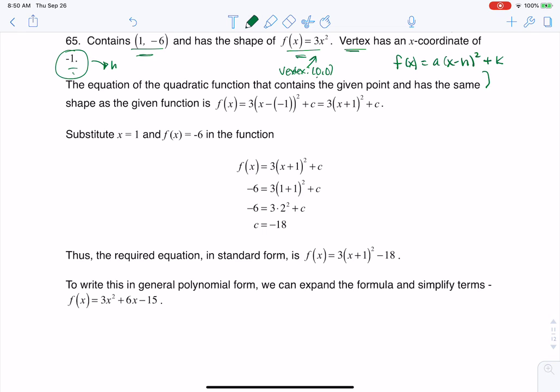So let me simplify this a little. I know that f(x) is going to be a times (x minus... now h is negative 1) squared plus k. So if I manipulate this a little bit, this is (x plus 1) squared plus this k.